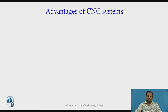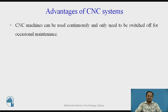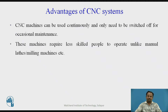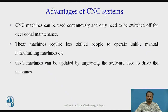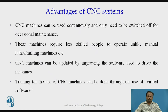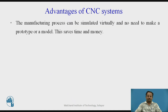Now we will see the advantages of CNC systems. CNC machines can be used continuously and only need to be switched off for occasional maintenance. These machines require less skilled people to operate, unlike manual lathe or milling machines. CNC machines can be updated by improving the software used to drive them. Training can be done through virtual software, and the manufacturing process can be simulated virtually, with no need to make a prototype or model — this saves time and money.